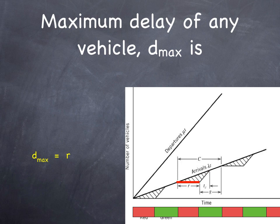The maximum delay is the poor person who arrived just as the light turns red because they have to wait for the entire red cycle.